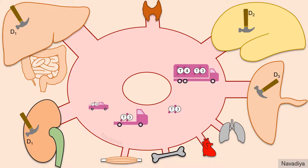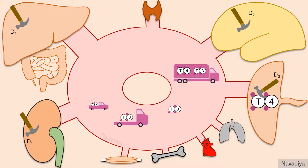Brain and pituitary are an exception — they don't take T3 from blood. They rather take T4 and convert it into T3 in-house by their own D2. D3 is found in the placenta; it removes iodine from the inner ring and produces RT3. Thus, T3 is largely produced at peripheral sites as compared to its direct synthesis at the thyroid gland.